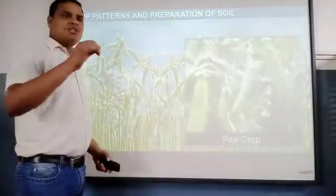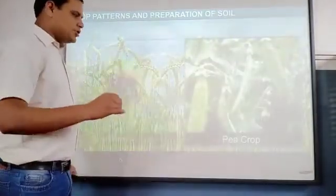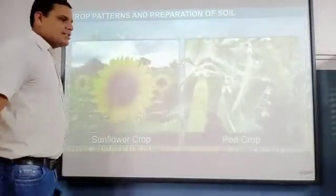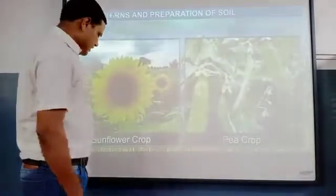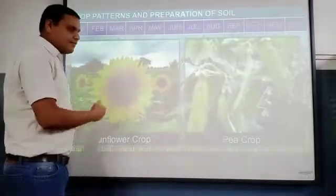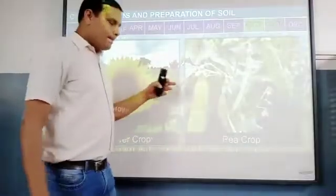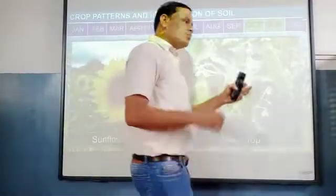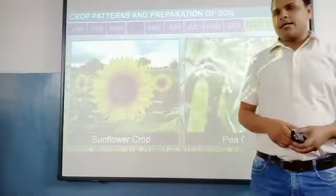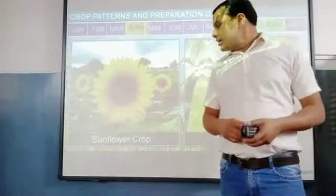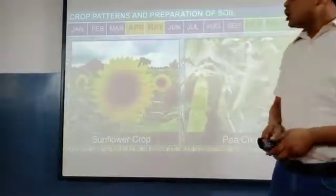The second category of crops are grown in the month of December or January — that is in the winter season. These include sunflowers, tea, and wheat. These are all called Rabi crops.